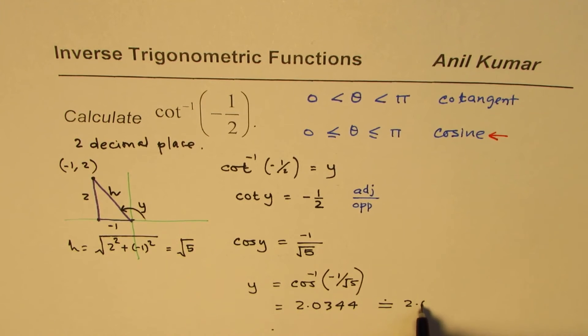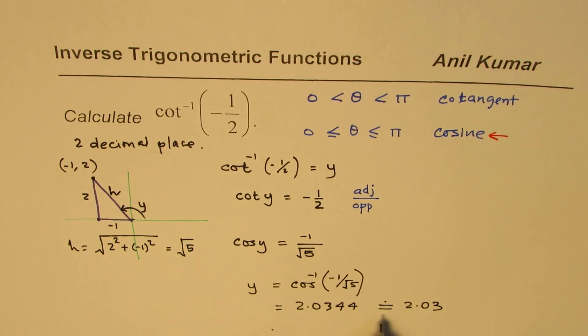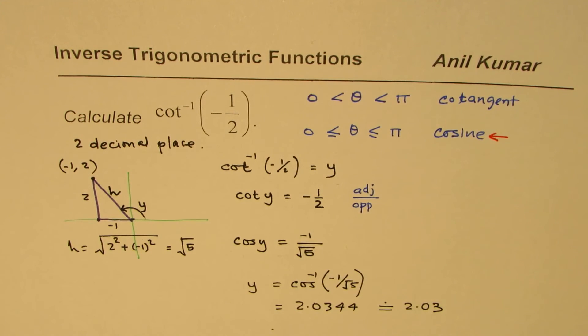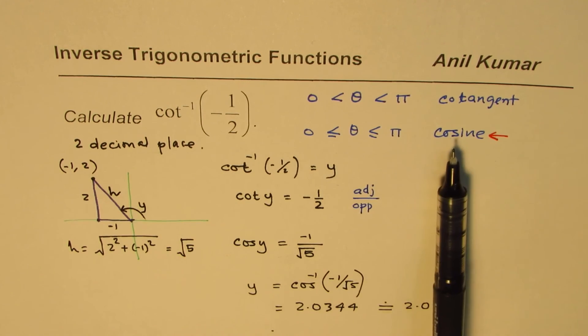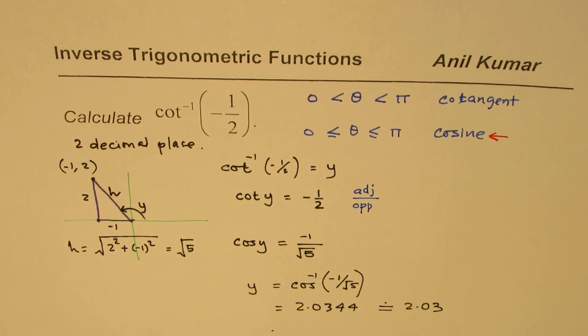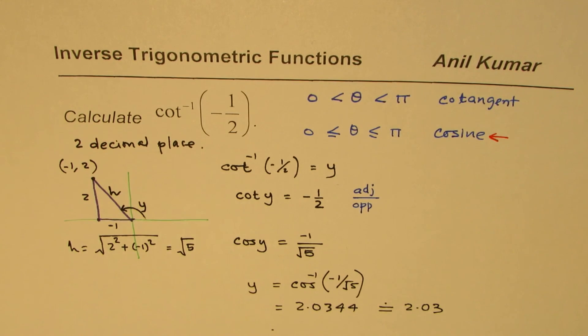So, it would be 2.03. That is how we can calculate the value of trigonometric inverse, especially for cotangent, whose value is not available on the calculator as such. I am Anil Kumar and I hope this video helps you to understand the concept, why we use cosine and how do we use it. You can always share and subscribe to my videos. Thank you and all the best.